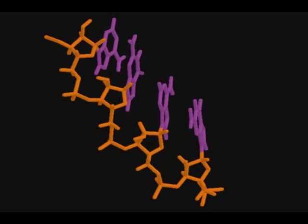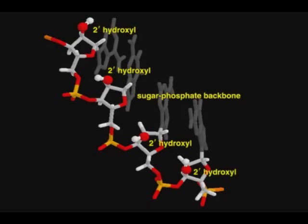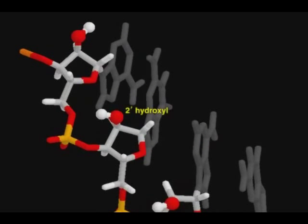The backbone is composed of repeating ribose sugars and phosphate groups. Unlike the 2' deoxyribose used in DNA, ribose has a hydroxyl group attached to the 2' carbon. This extra hydroxyl group influences the secondary structure and is the primary reason why an RNA helix has a different shape.